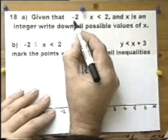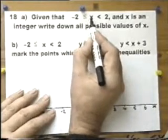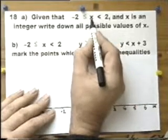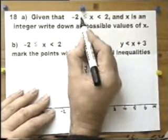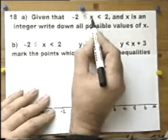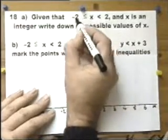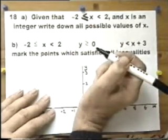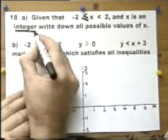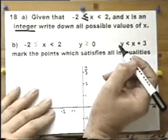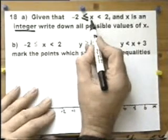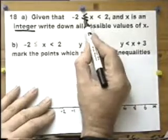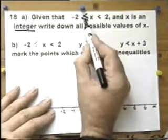You can read this as minus 2 is less than or equal to x is less than 2, but I prefer to read it as x is between minus 2 and plus 2. It can also equal minus 2 — this sign here says it could also equal minus 2. And x is an integer, which means whole number. So we're saying x is any whole number between minus 2 and 2, including minus 2.